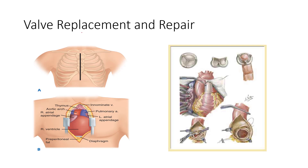In the valve replacement procedure, they open up the sternum to expose the heart, cut open the aorta, remove the diseased valve, and replace it — here's an example of a xenograft or biological graft being placed over where the former valve had been located. This is a valve replacement and repair procedure.